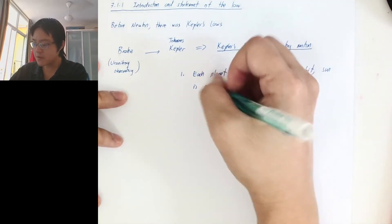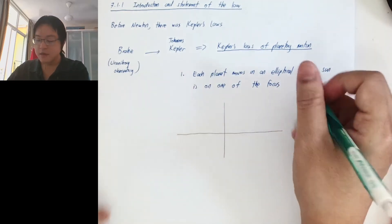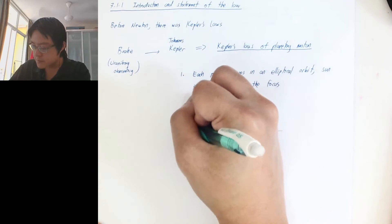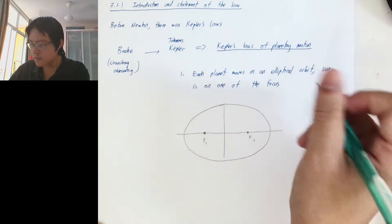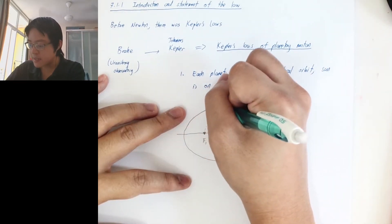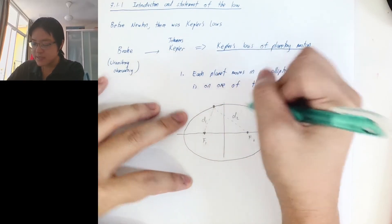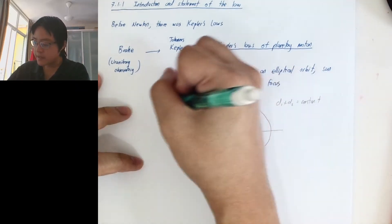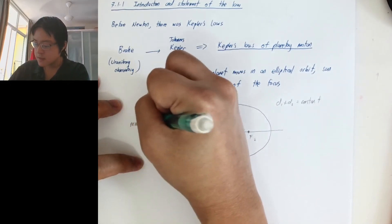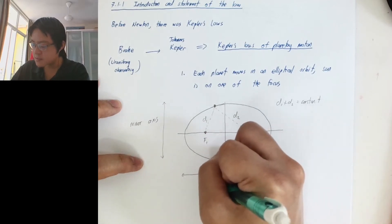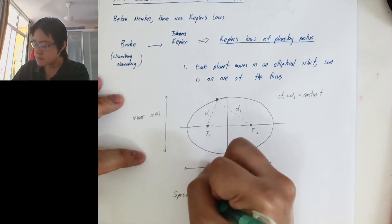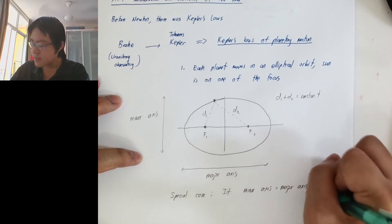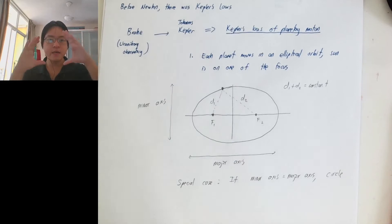Do you know what the features of an ellipse are? You can plot the ellipse on the xy plane. For ellipses, we have two foci — call this F1 and F2 — and the ellipse has this type of shape. The distinguishing feature of the ellipse is that the distance d1 plus d2 is constant. This is how you trace the shape of the ellipse. Over here is called the minor axis, and this distance is called the major axis. A special case: if the minor axis equals the major axis, we get a circle. A circle is just the ellipse where the major and minor axis are the same — it's perfectly round.